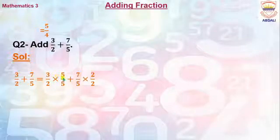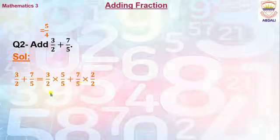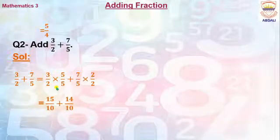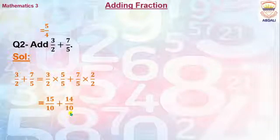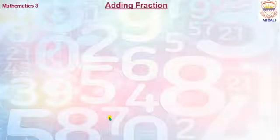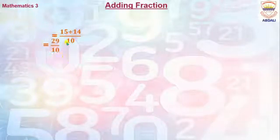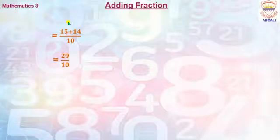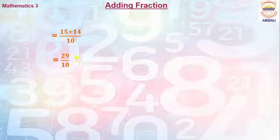So: 3/2 multiplied by 5/5, plus 7/5 multiplied by 2/2. After multiplying, we get 15/10 plus 14/10. Now our denominators are the same, so we write the denominator one time and add the values of the numerator, which gives us 29/10. This is the answer to the addition of both fractions.